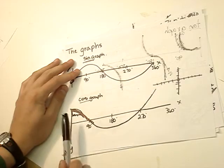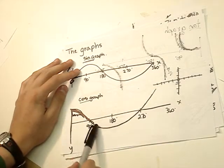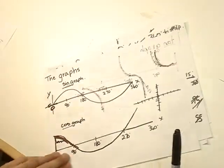Cosine graph starts from the top of your y-axis, curves down, hits 90, comes up, hits 270.